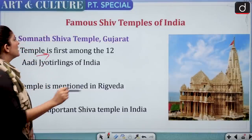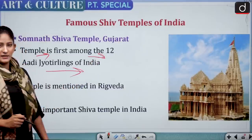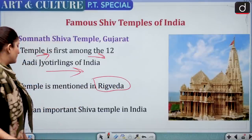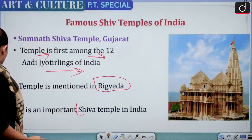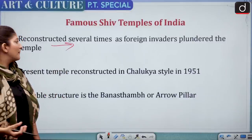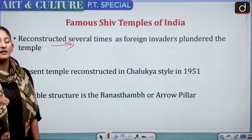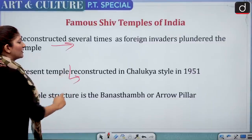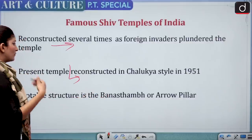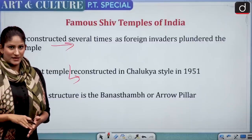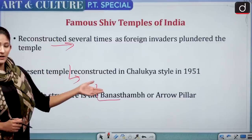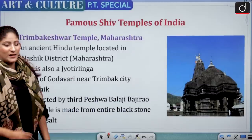Somnath Shiva Temple is found in Gujarat. It is the first among the 12 Jyotirlingas of India, and the temple is mentioned in the Rigveda. It was reconstructed several times because foreign invaders plundered it. The present temple was reconstructed in the Chalukyan style in 1951. A notable structure is the Bana Stambha or arrow pillar.